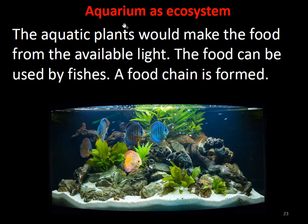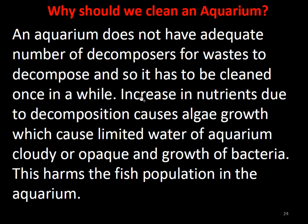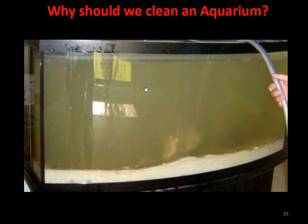Can we consider an aquarium as an ecosystem? Yes. Aquatic plants make food from the available light in the aquarium, and the food can be used by the fish, forming a food chain. Why do we need to clean an aquarium? A small aquarium at home does not have enough bacterial decomposers for the waste to decompose. Increases in nutrients due to decomposers cause algae growth, making the water cloudy or opaque, which harms the fish population.